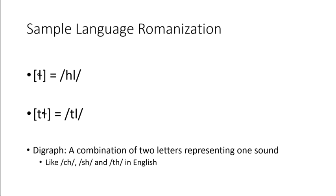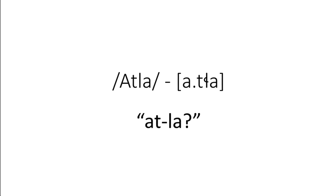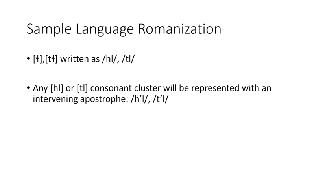These are what we call digraphs, where a single sound is represented with multiple characters. Now, written as digraphs, these might be misconstrued as consonant clusters, so someone might be tempted to read atla as at-la, but as long as we detail this in our romanization system, and have a way of potentially disambiguating any similar consonant clusters that occur, we should be fine.